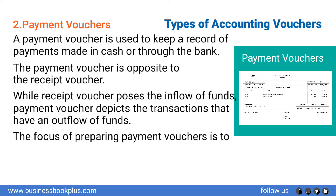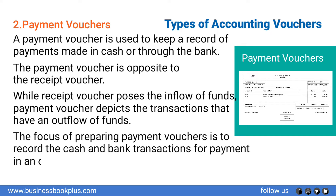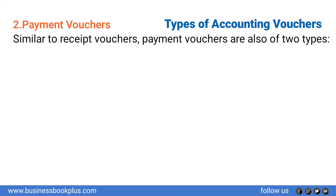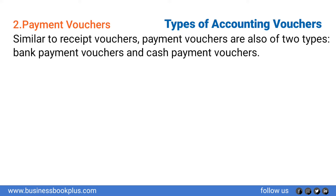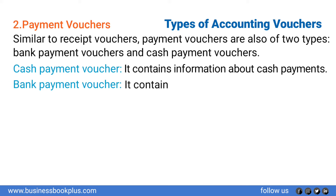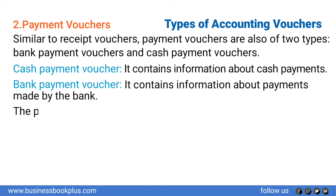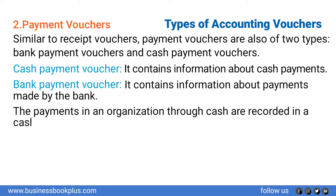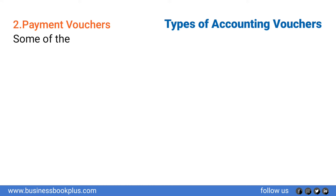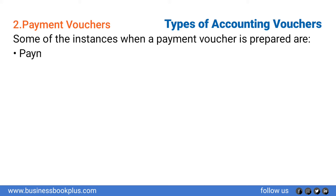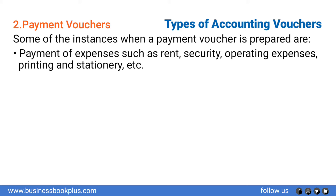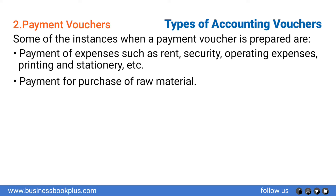The focus of preparing a payment voucher is to record the cash and bank transactions for payment in an organization. Payment vouchers are also of two types: bank payment vouchers and cash payment vouchers. Cash payment vouchers contain information about cash payments, and bank payment vouchers contain information about payments made by the bank. The payments through cash are recorded in a cash payment voucher, while those done through a demand draft or cheque are recorded in a bank payment voucher. Some instances when a payment voucher is prepared are: payment of expenses such as rent, security, operating expenses, and printing and stationery, as well as payment for purchase of raw material.